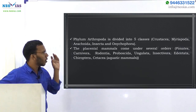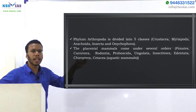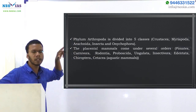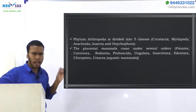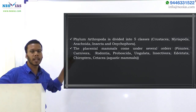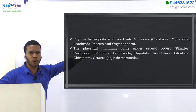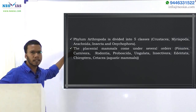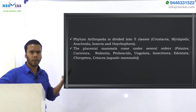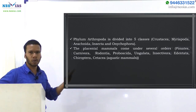Crustacea are organisms with jointed bodies and jointed legs that live in aquatic environments. Arachnidae are also organisms with jointed bodies and jointed legs, but they live in terrestrial environments. So the key difference is: Crustacea are aquatic and Arachnidae are terrestrial. Examples of Crustacea are prawns, crabs, and krill; examples of Arachnidae are spiders, scorpions, and mites.